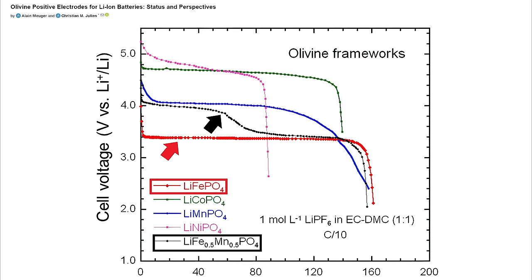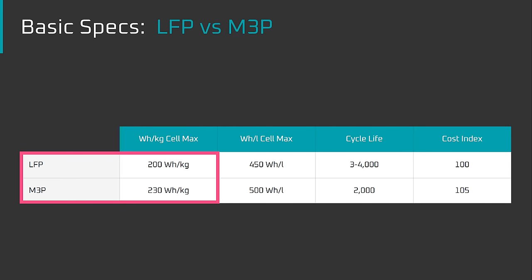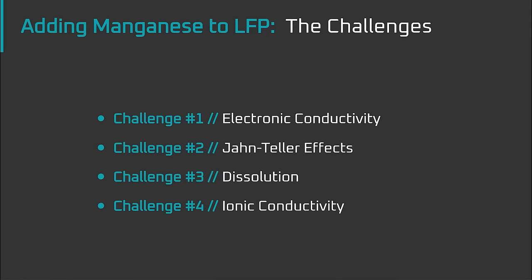The manganese increases the voltage potential of the LFP, and it's the reason why LMFP can have up to 15–20% higher energy density than LFP. However, the addition of manganese creates electronic conductivity issues, Jahn-Teller effects, dissolution issues, and ionic conductivity issues. Let's walk through each.